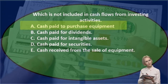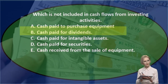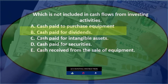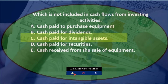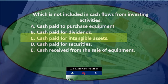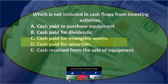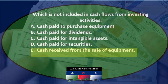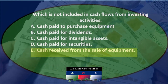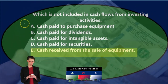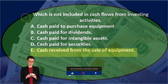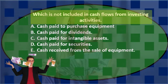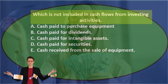The answer choices are: A) cash paid to purchase equipment, B) cash paid for dividends, C) cash paid for intangible assets, D) cash paid for securities, and E) cash received from the sale of equipment. Let's go through this using the process of elimination — which is not included in cash flows from investing activities?